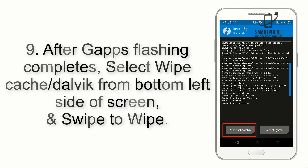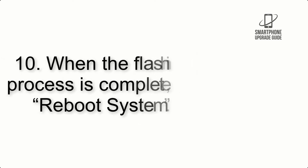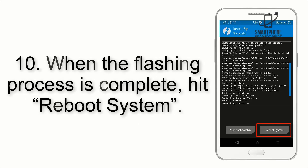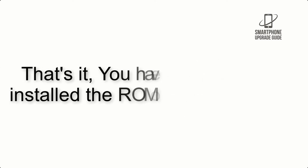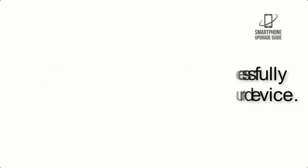Step 9: After GApps flashing completes, select Wipe Cache and Dalvik from the bottom left side of the screen and swipe to wipe. Step 10: When the flashing process is complete, hit Reboot System. That's it — you have successfully installed the ROM on your device.